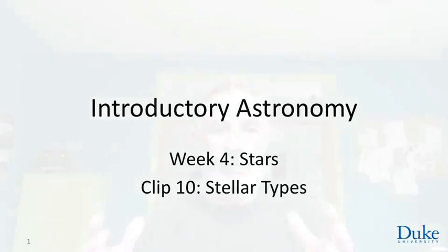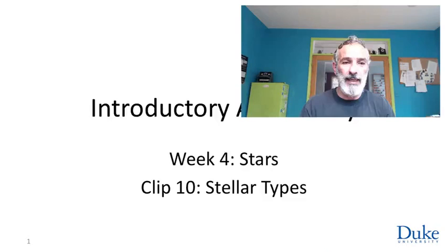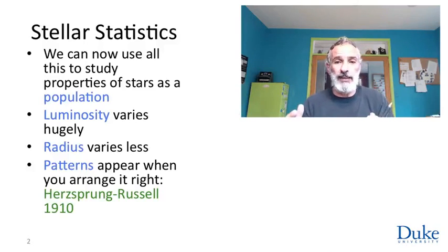We now know how to characterize our population of stars. We use their luminosity and we use their spectra to determine what type of star they are. We give their spectral type, that gives us their surface temperature, and we can now try to find correlations between luminosity and temperature and do population studies.